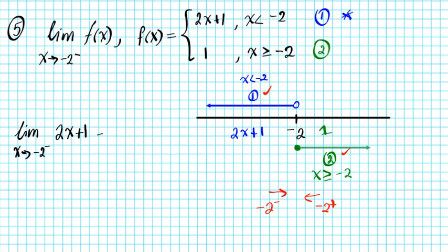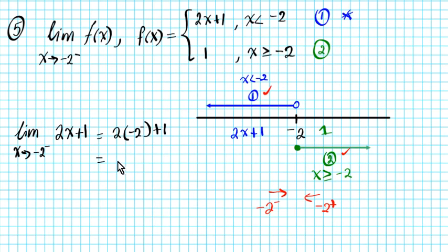To finish, we substitute: two times negative two from the left, plus one. When you double negative two from the left, the sign and direction remain the same, giving negative four from the left plus one.